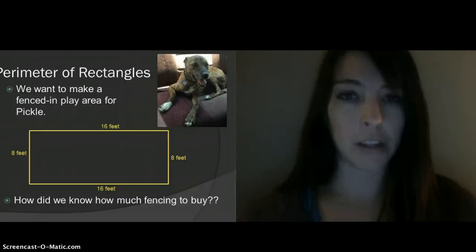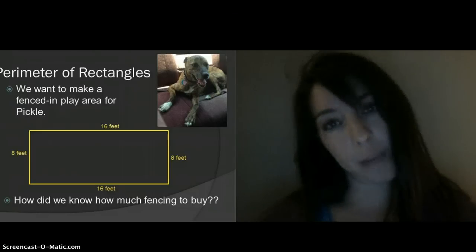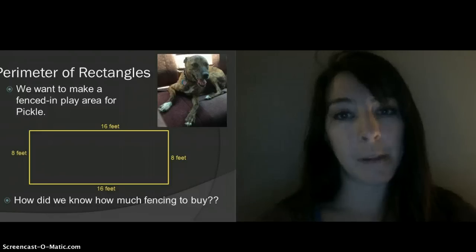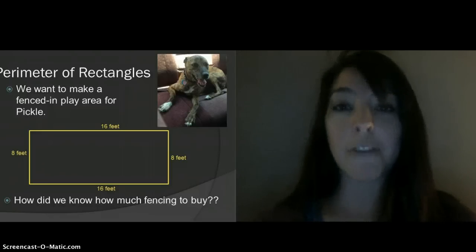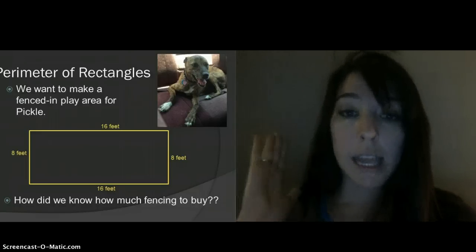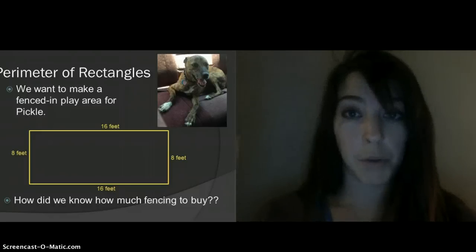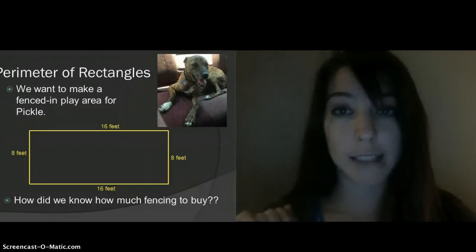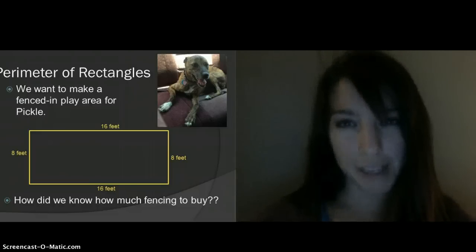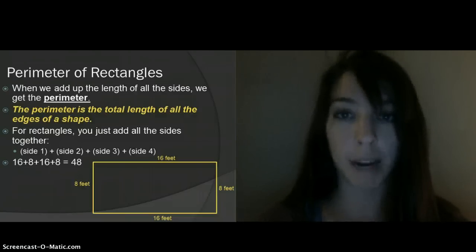So Mike went out there, and he looked at the dimensions of the backyard, and he came up with this drawing that's pictured over here in the PowerPoint for this play area that we wanted to build Pickle, but we needed to put a fence around it. The area was going to be 16 feet long and 8 feet wide, and it was going to be a perfect rectangle, so the two parallel lines were going to be the exact same length on either side. So we had to figure out how much fencing to buy. To do that, all we had to do was figure out the perimeter of the rectangle.